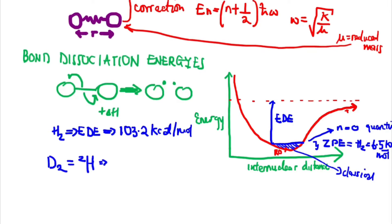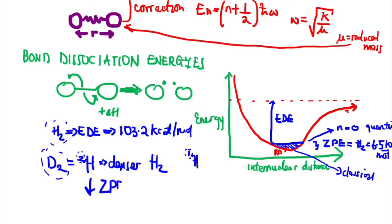The experimental dissociation energy for hydrogen gas H₂ is 103.2 kcal/mol. Comparing hydrogen gas with its isotope deuterium D₂, deuterium is denser than hydrogen gas due to the heavier nuclei. This implies that D₂ would have a lower zero point energy than H₂. This shows that zero point energy is a quantum effect that works more significantly for lighter molecules like H₂ compared to heavier ones like D₂.